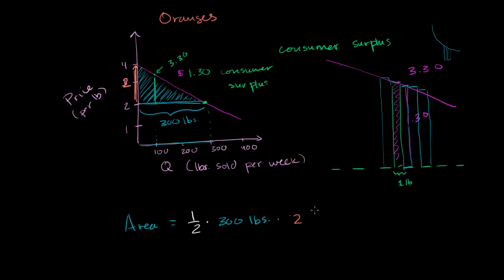Times $2, I'll write it this way. Times $2 per pound. The pounds cancel out. One-half times two is one. Times 300 is 300.